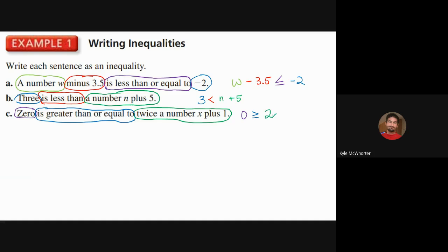For part c, 'zero is greater than or equal to twice a number x plus 1' — twice a number x would be 2x, so we write: 0 ≥ 2x + 1. That's an important skill: recognizing what phrases in English sentences translate into math equations and inequalities.